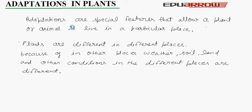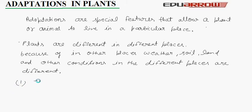Plants are different in different places because weather, soil, land and other conditions vary from place to place. We can classify plants into two groups according to their surroundings. First is terrestrial plants — plants growing on land.